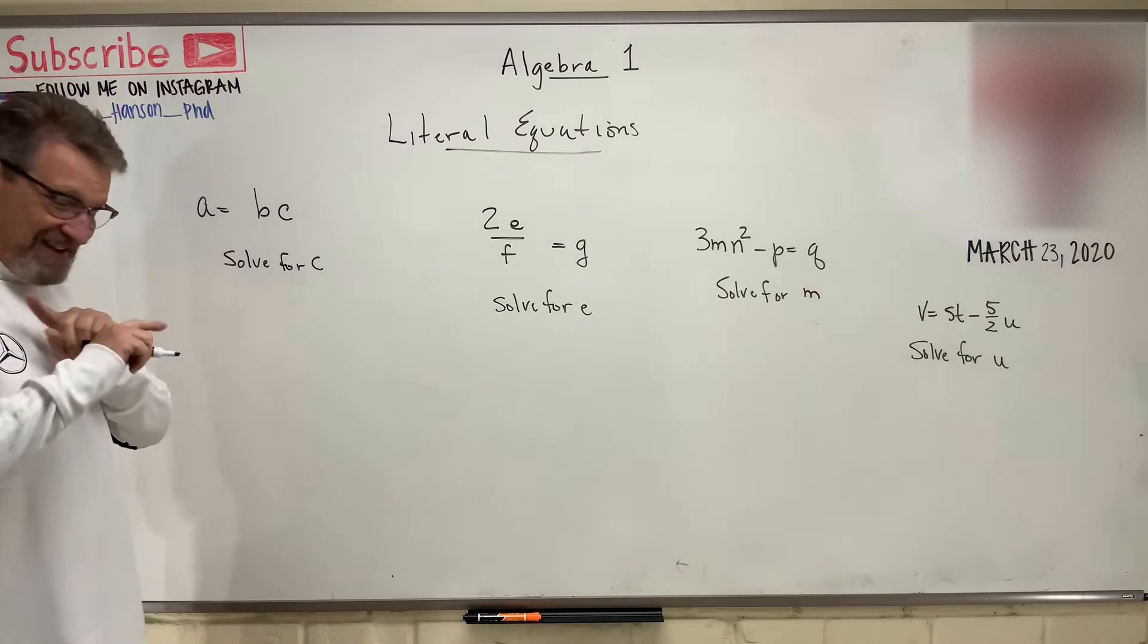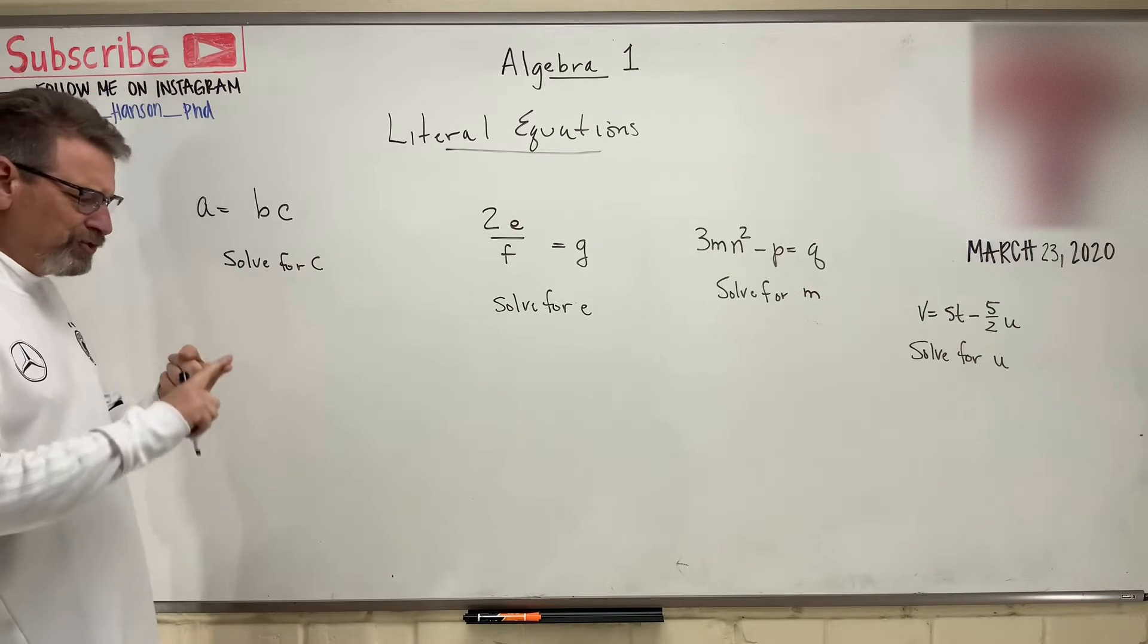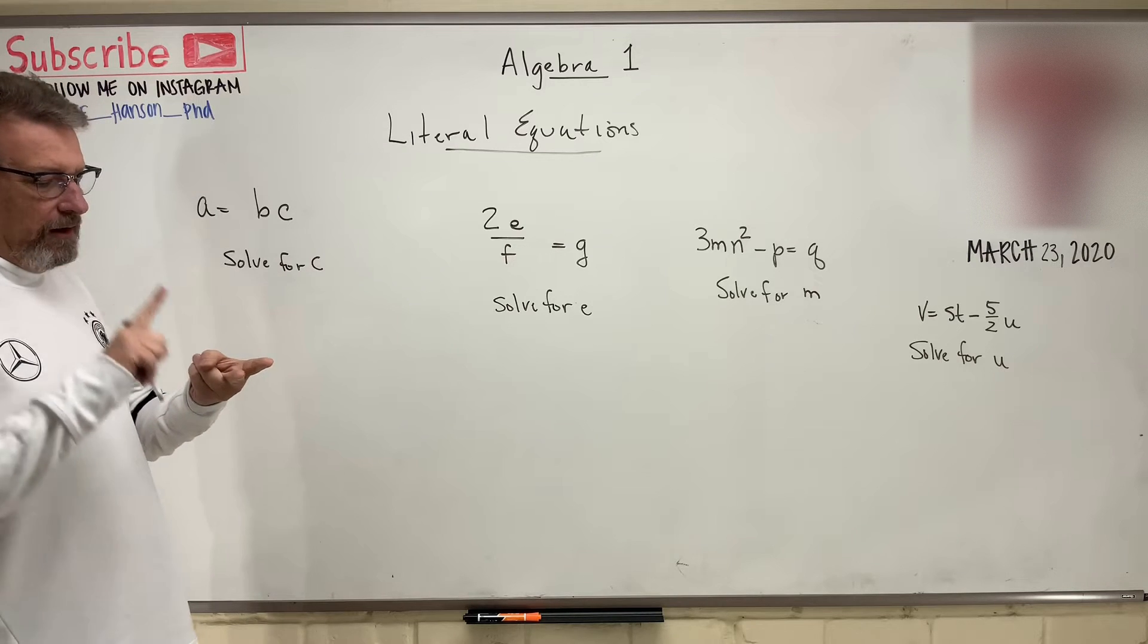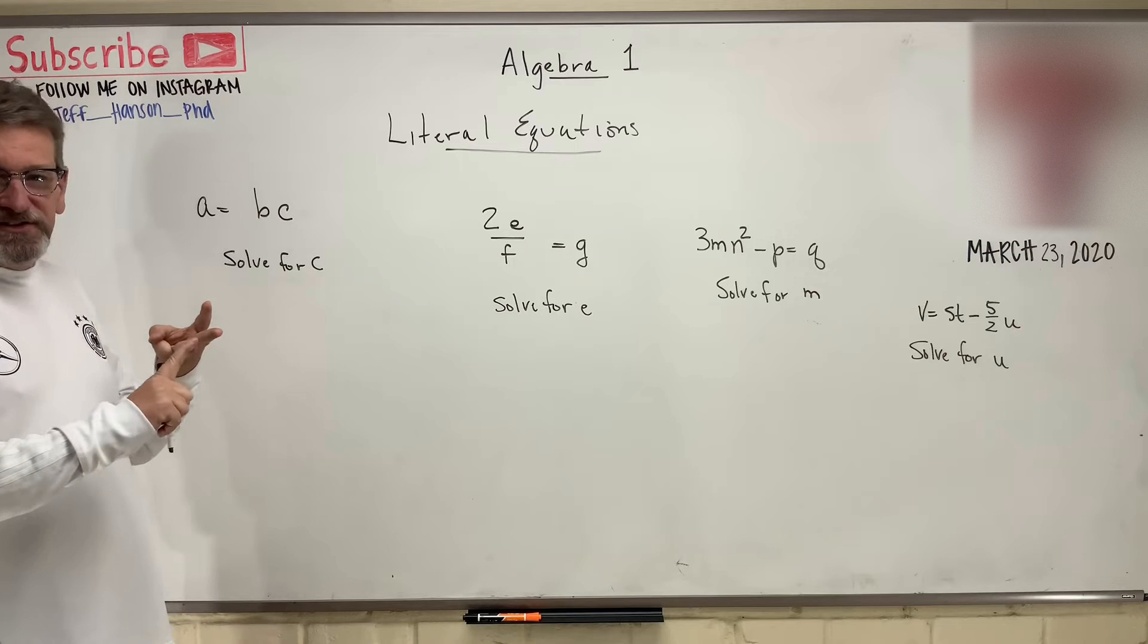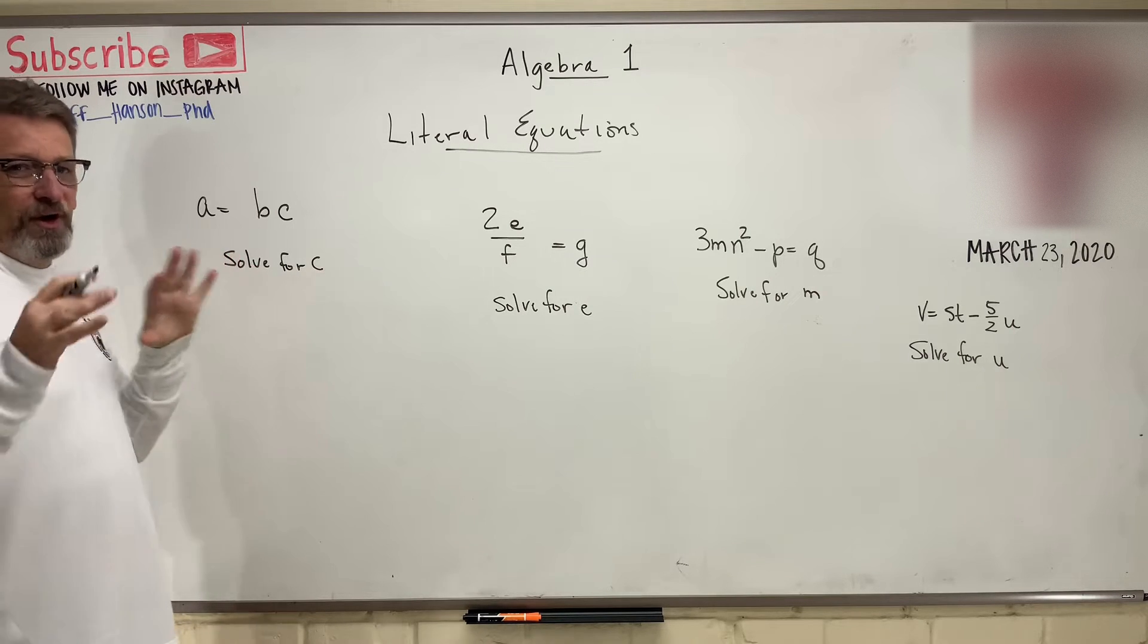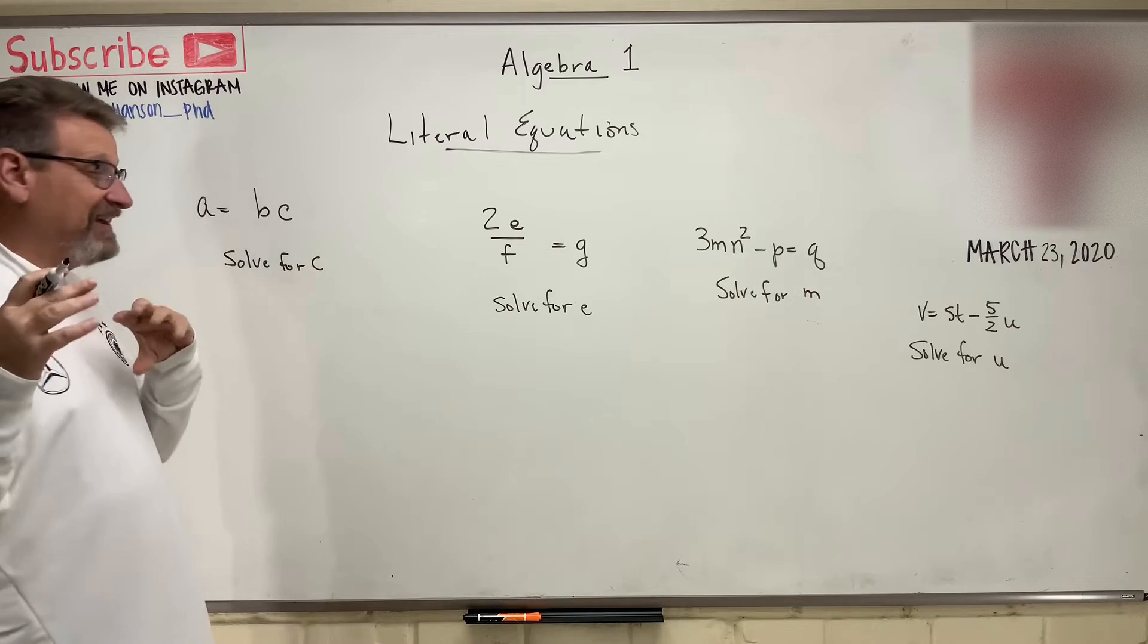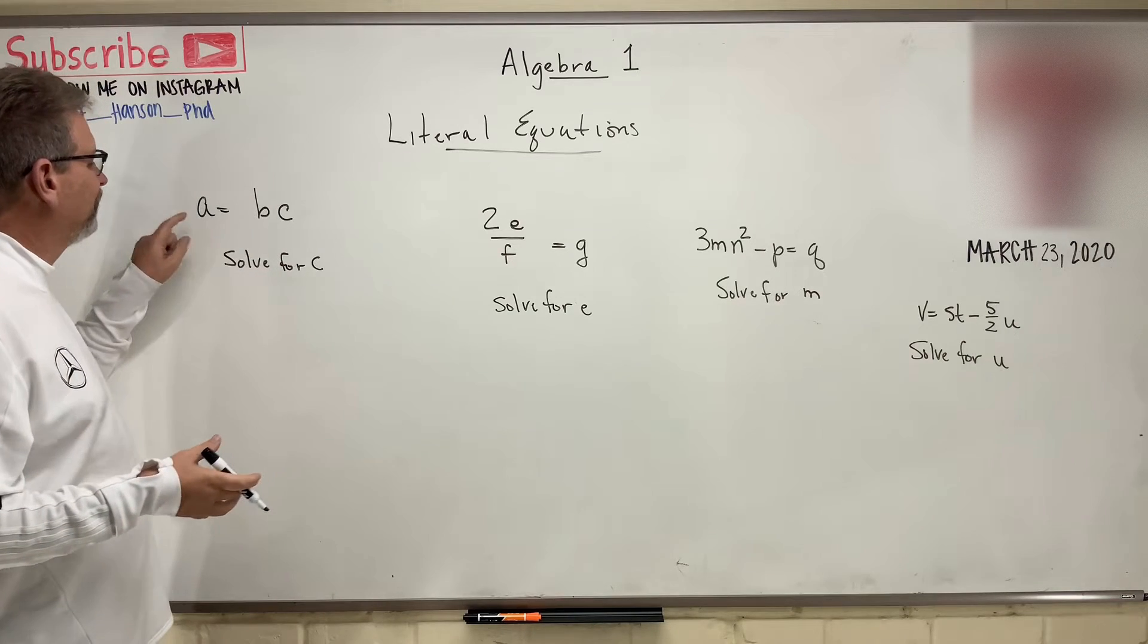Let's see how the exact same rules apply that we've been using the whole time. Distributive properties. What you do to one side of the equation, you have to do to the other. Dividing by fractions is the same as multiplying by the reciprocal. You know, all those rules are still going to apply to these. Let's see if we can use those techniques and solve this. Just because it doesn't have a number in there doesn't mean we can't do it. So, let's go.